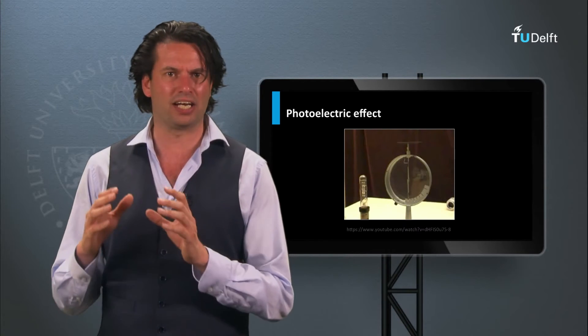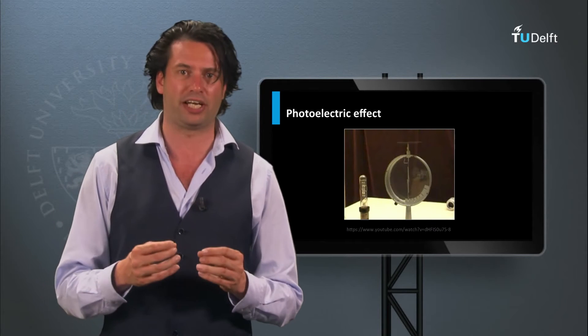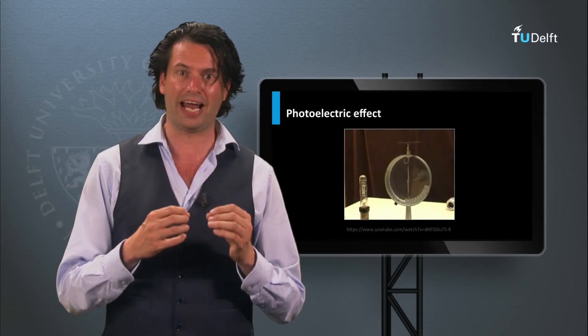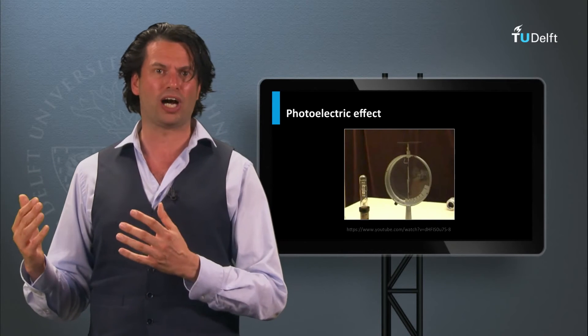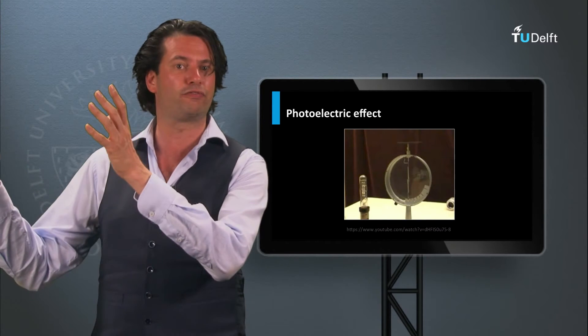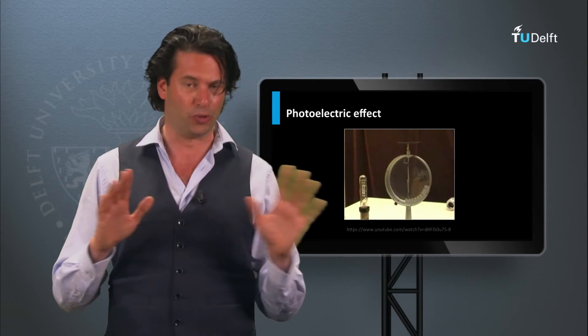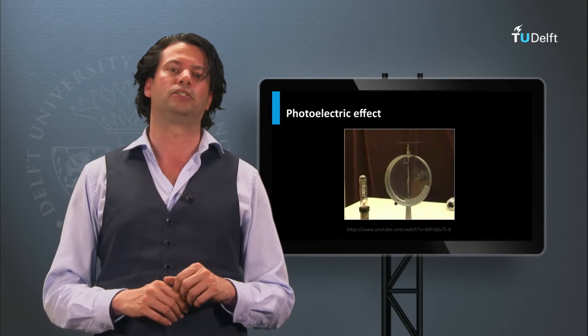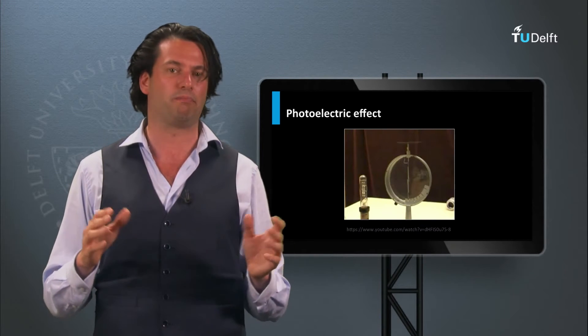To eject an electron out of the material it requires a certain threshold energy. The photoelectric effect shows that when the energy of the photons are above this threshold, the charge can be ejected from the material. If the energy is below this threshold, no electrons are ejected. This demonstrates that light can be described by photons.